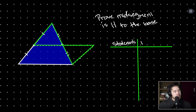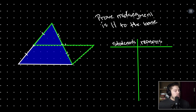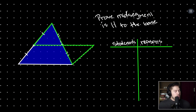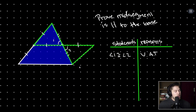Statements and reasons. We don't really have a given to restate — we just have our picture. We're focusing on these triangles and we'll label our picture as we go. We can say angle 1 is congruent to angle 2 by the vertical angle theorem. We can also say that side a is congruent to side b by construction.